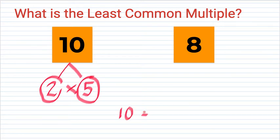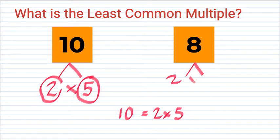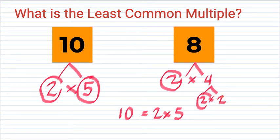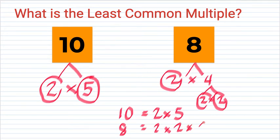Now for 8, aside from 1 times 8, we can have 2 times 4. Since 2 is prime but 4 is not, we break 4 down into 2 times 2. Both 2s are prime, so the prime factors of 8 are 2 times 2 times 2.